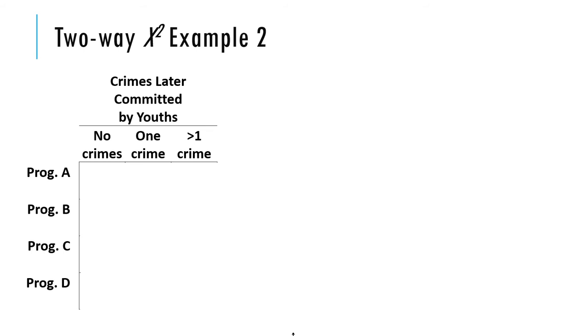Here's the data. The reason we have to use a chi-square test and can't use an ANOVA is because this variable, number of crimes, is not numerical. It was collected in such a way that it's not numerical.